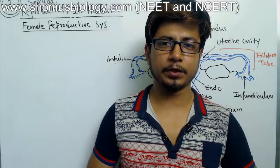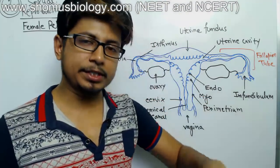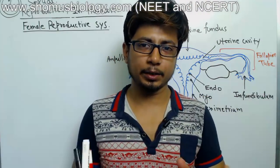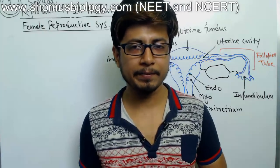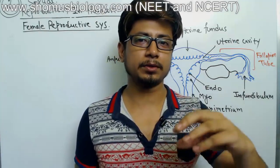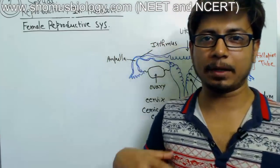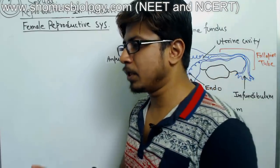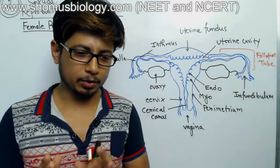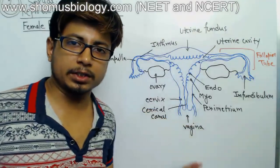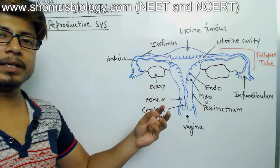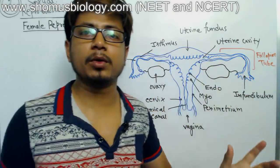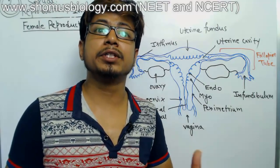Welcome to another video from Shamos Biology. In this chapter we've been talking about sexual reproduction in humans, looking at the human reproductive system in both male and female. In the last class we talked about the male reproductive system; now we'll talk about the female reproductive system. This video will be divided into two parts: anatomical structures, and then gametogenesis in the female, which is known as oogenesis.